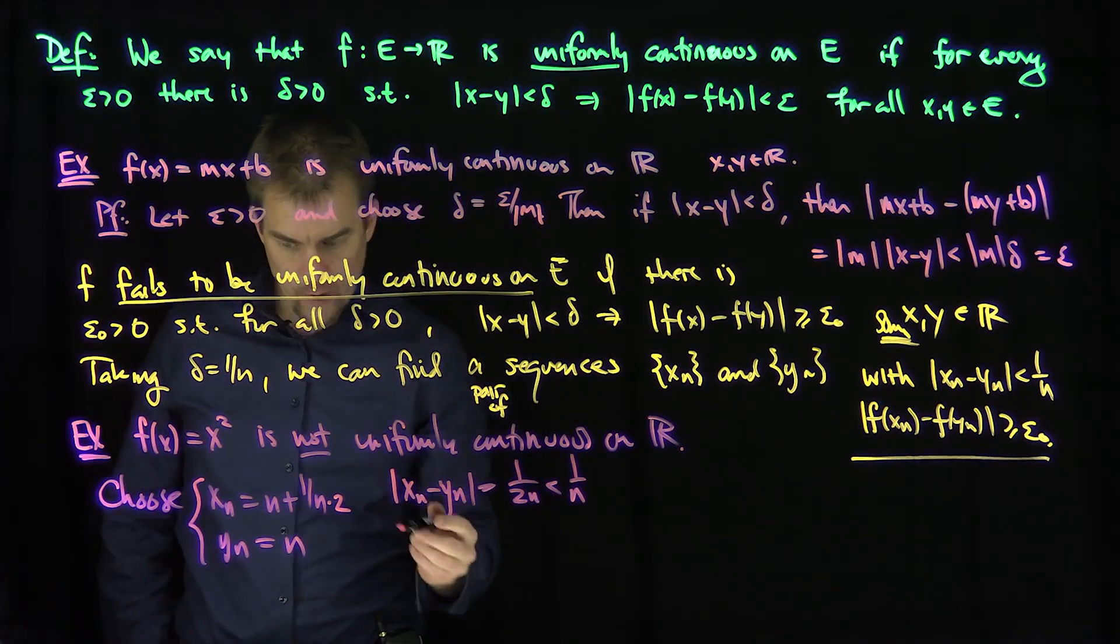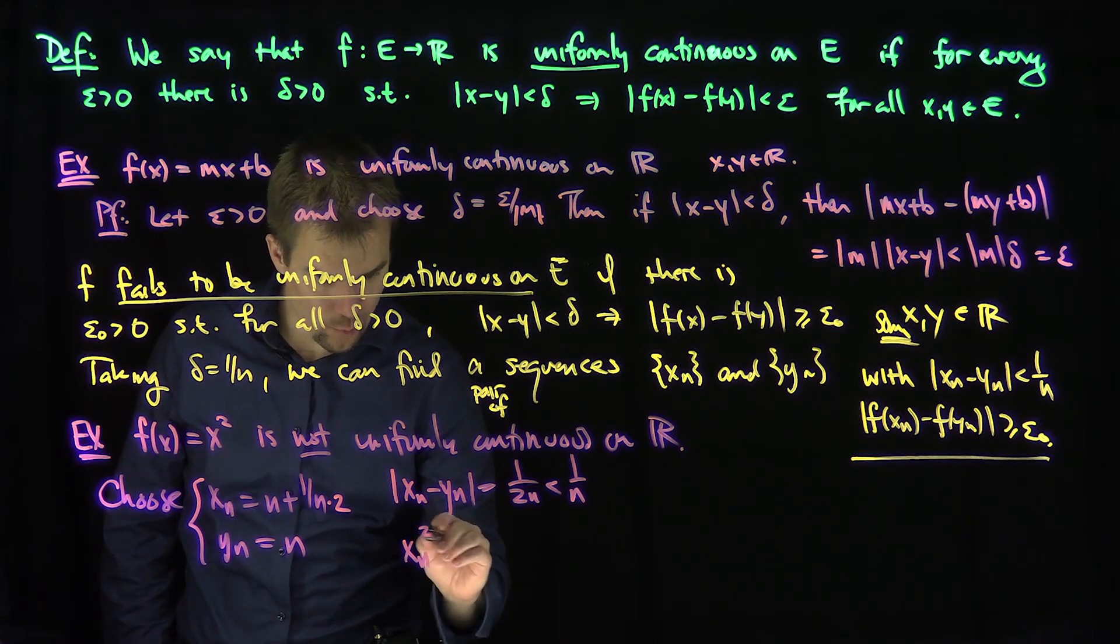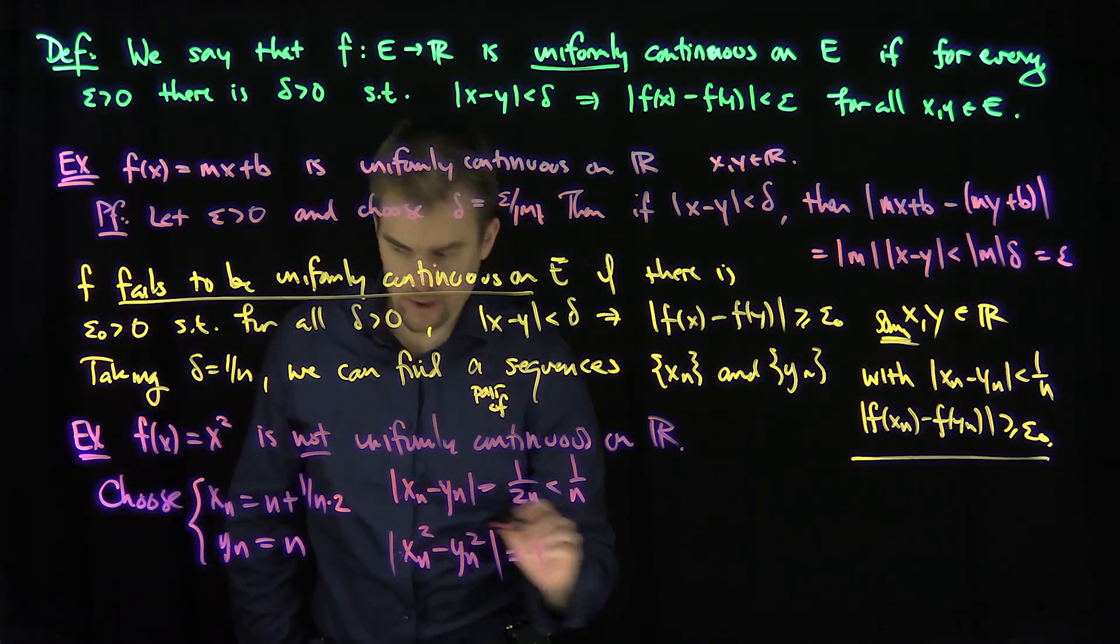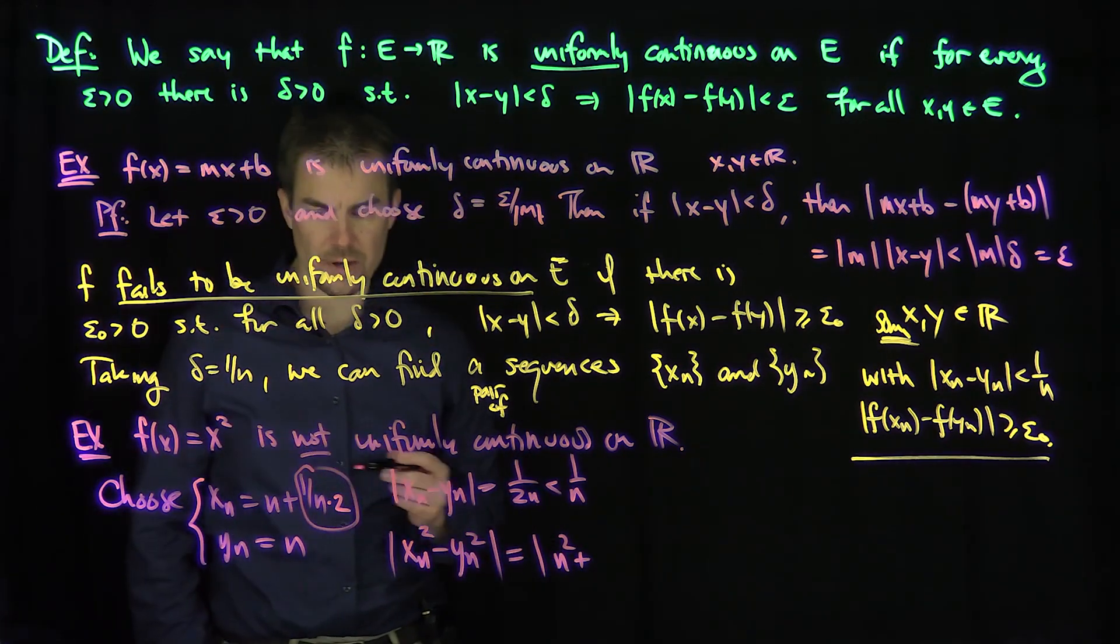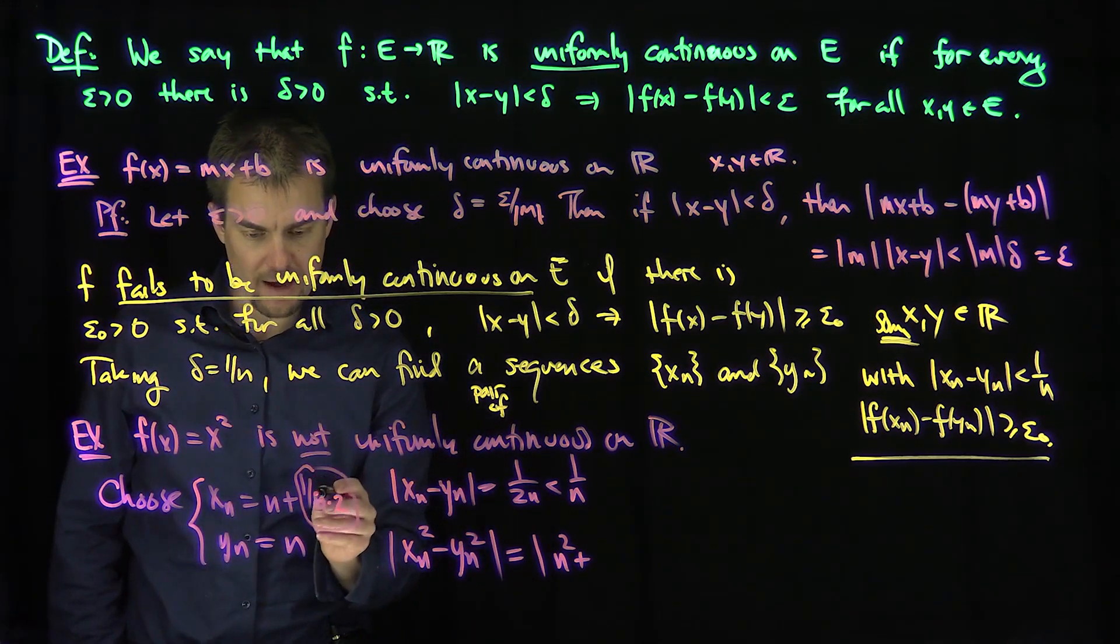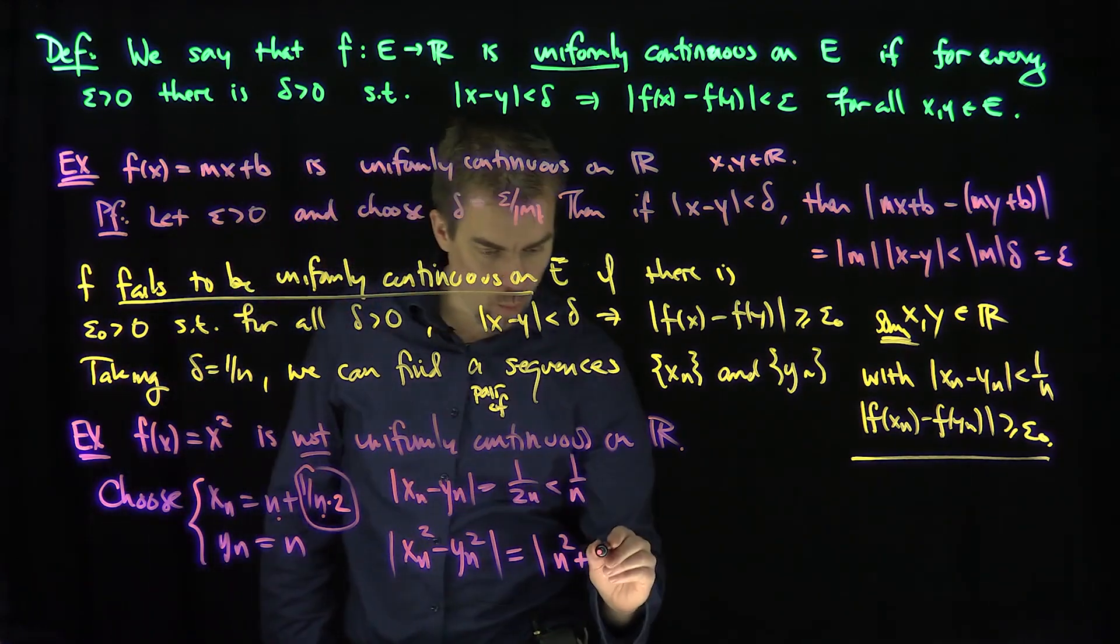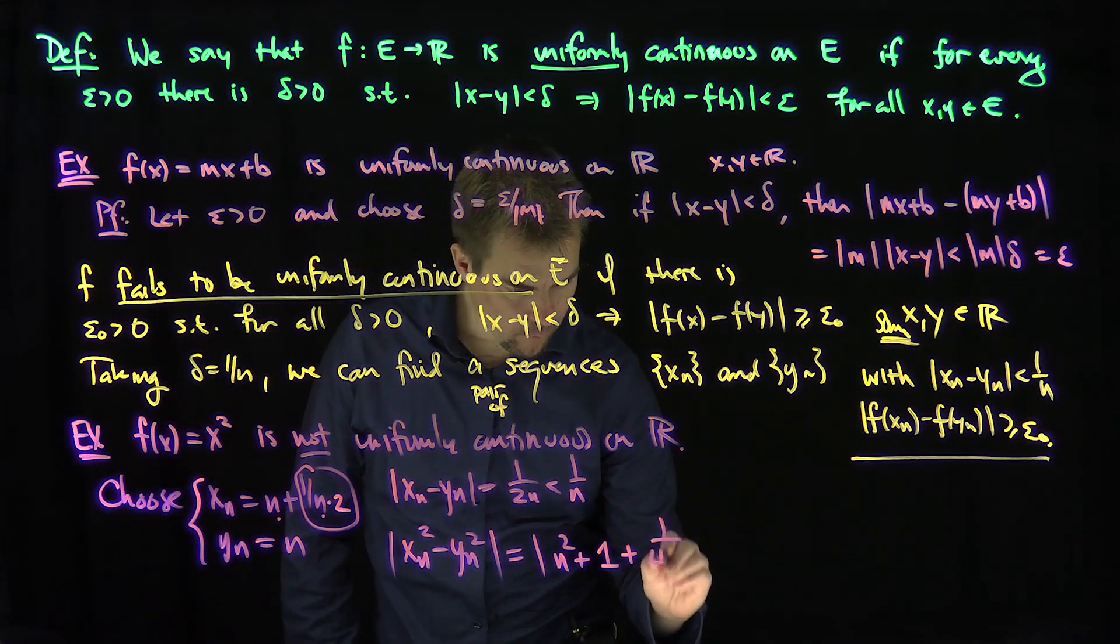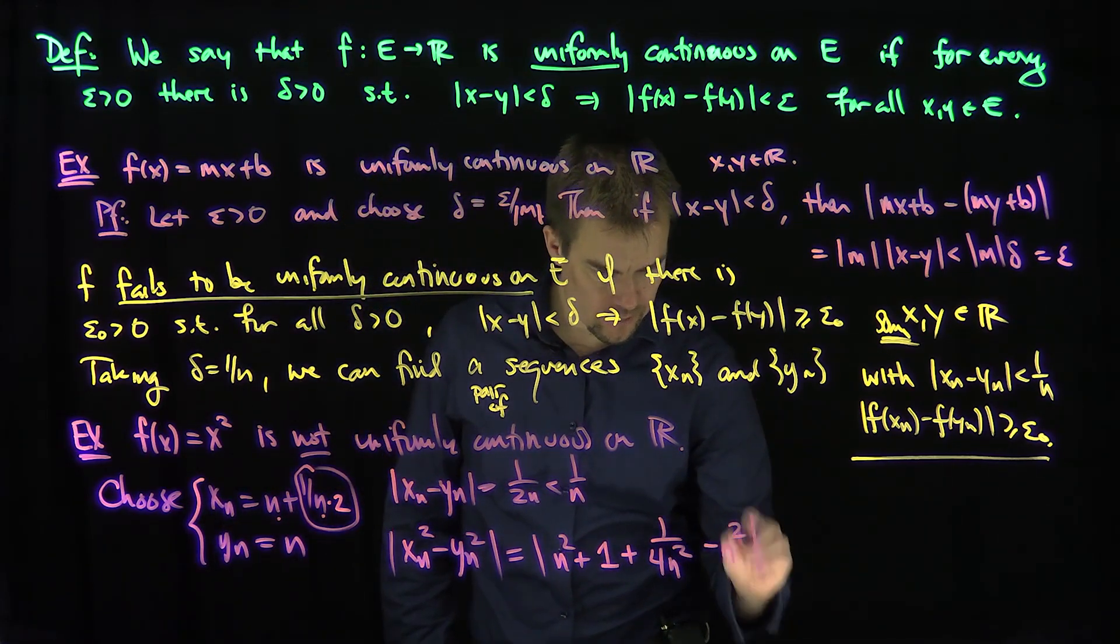But now what happens when I look at the difference of the squares? So if I do x_n squared minus y_n squared in absolute value, the x_n squared is going to be n squared plus 2 times n times 1 over 2n. So I'm going to have 1 plus 1 over 4n squared. And then subtract off n squared from this. So the n squareds cancel out.